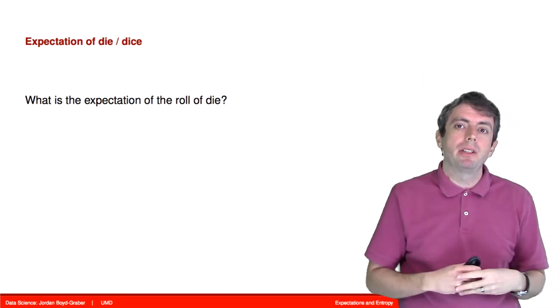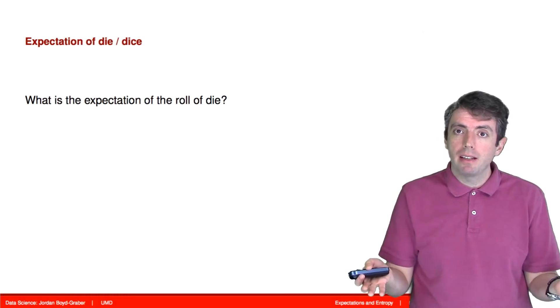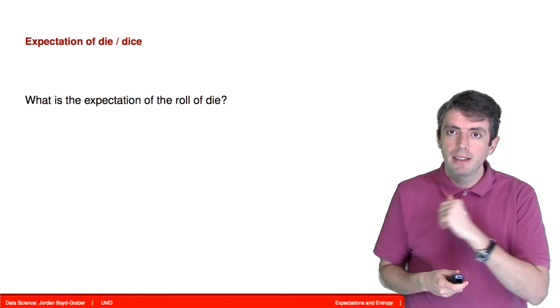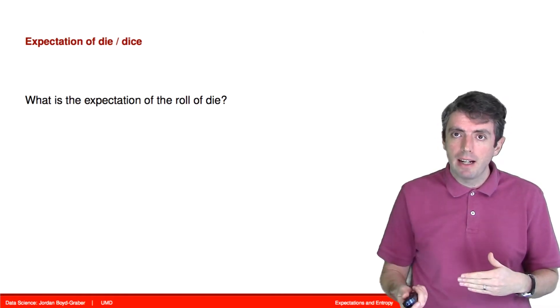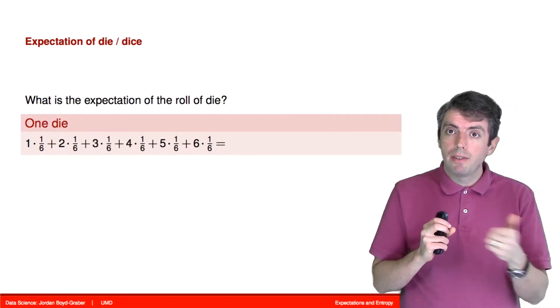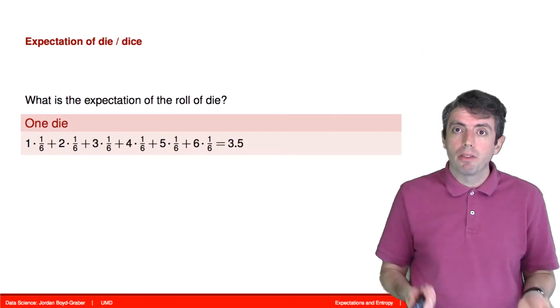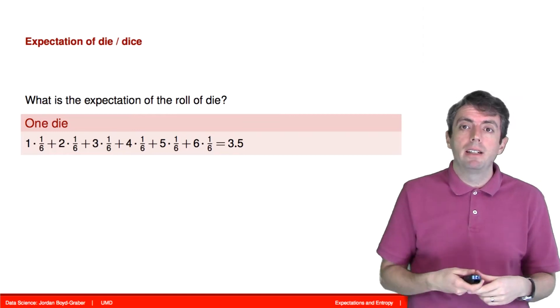What's the expected value of a roll of a single die? There are six possible outcomes that the die can take: one, two, three, four, five, six, and each of those has probability one-sixth. So if we write out the formula of the expected value, we take each of those values and multiply it by one-sixth, add those together, and we get three and a half.